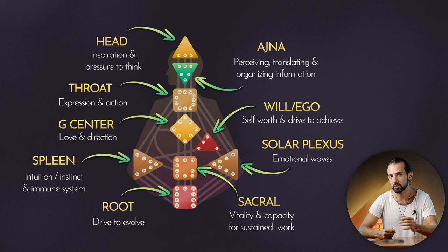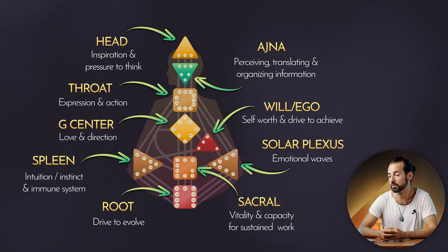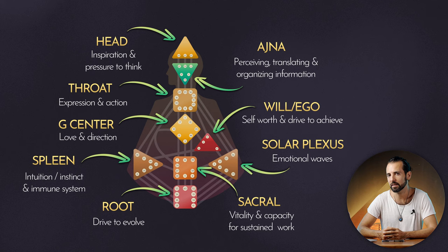The Chi center is about love and direction — not direction from the mind but from the soul. Here is the seat of the magnetic monopole, which leads us to the experiences we need to have in this life. Then you have the will or ego — our self-worth, drive to achieve things, and sense of self-value. The solar plexus is the emotional waves. The spleen is the intuition, instinct, and immune system. The sacral is our vitality and capacity to do sustained amounts of work. And finally, the root is the adrenal glands — the drive to evolve, to grow, to become something better, and it comes in pulses during your life.